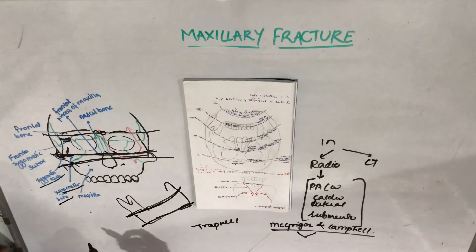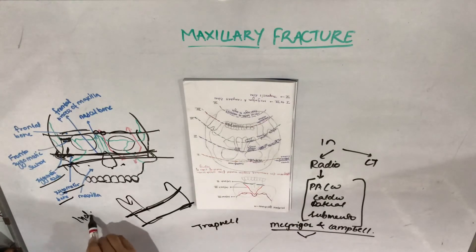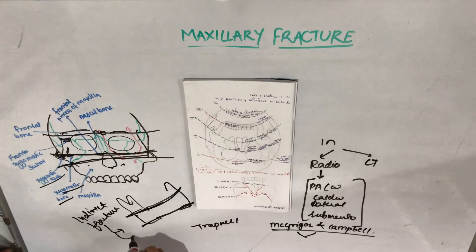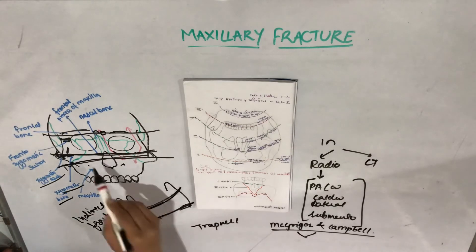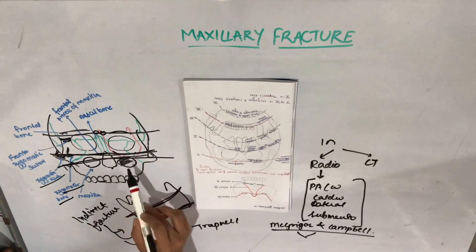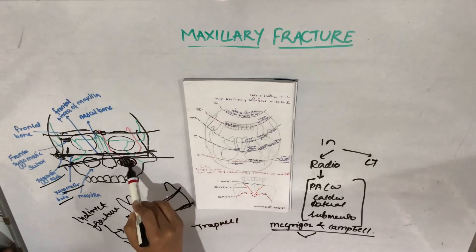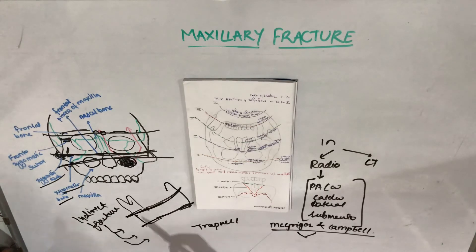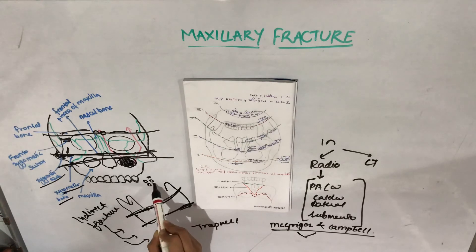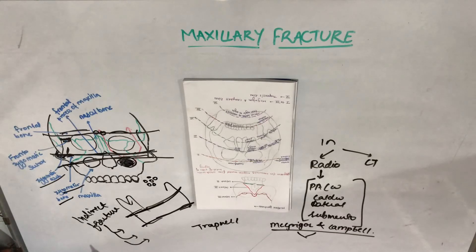Indirect signs of fractures on radiographs include: first, soft tissue swelling, which should prompt consideration of maxillary fracture. Second, opacification of the maxillary sinus. Third, soft tissue emphysema — rare but a useful sign in fractures involving the nasal cavity and paranasal sinuses — appearing as multiple small radiolucencies or an overall increase in radiolucency of the soft tissue.